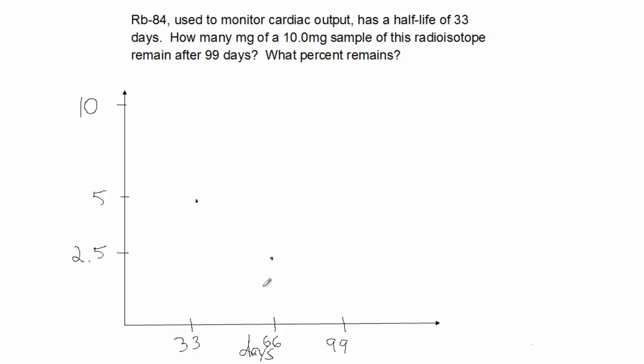If we go through another half-life, we'll be at 99 days. So we'll pass through three half-lives. Another half-life means we have to consume half of the previous value. If we're at 2.5, we consume half of that, so we'll be at 1.25.